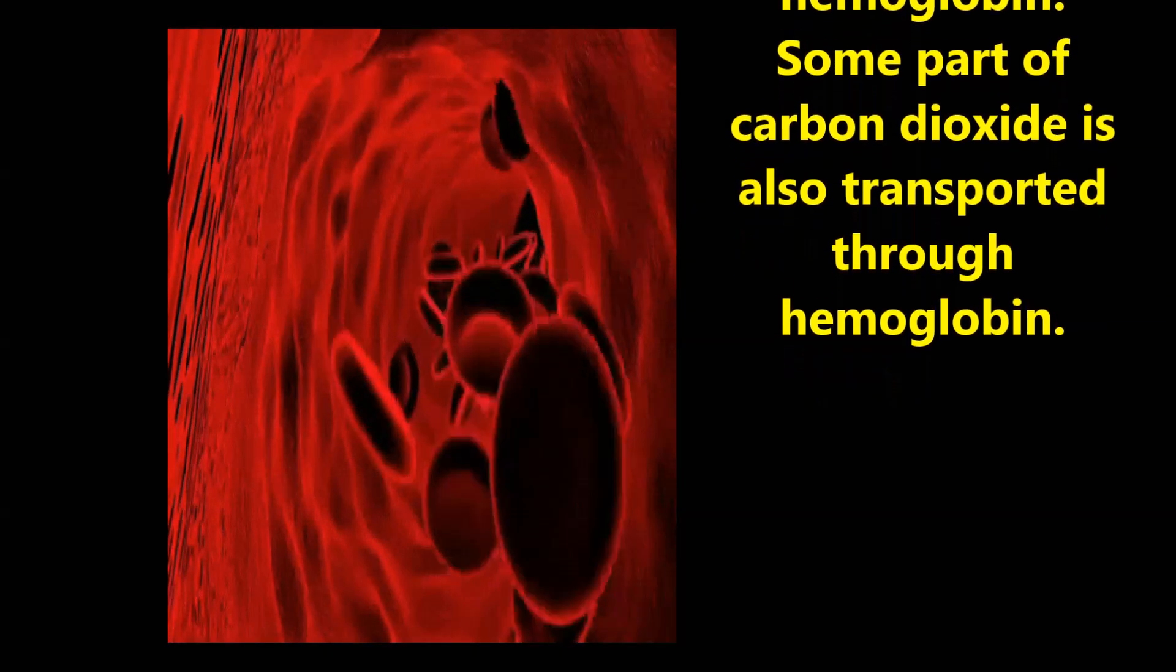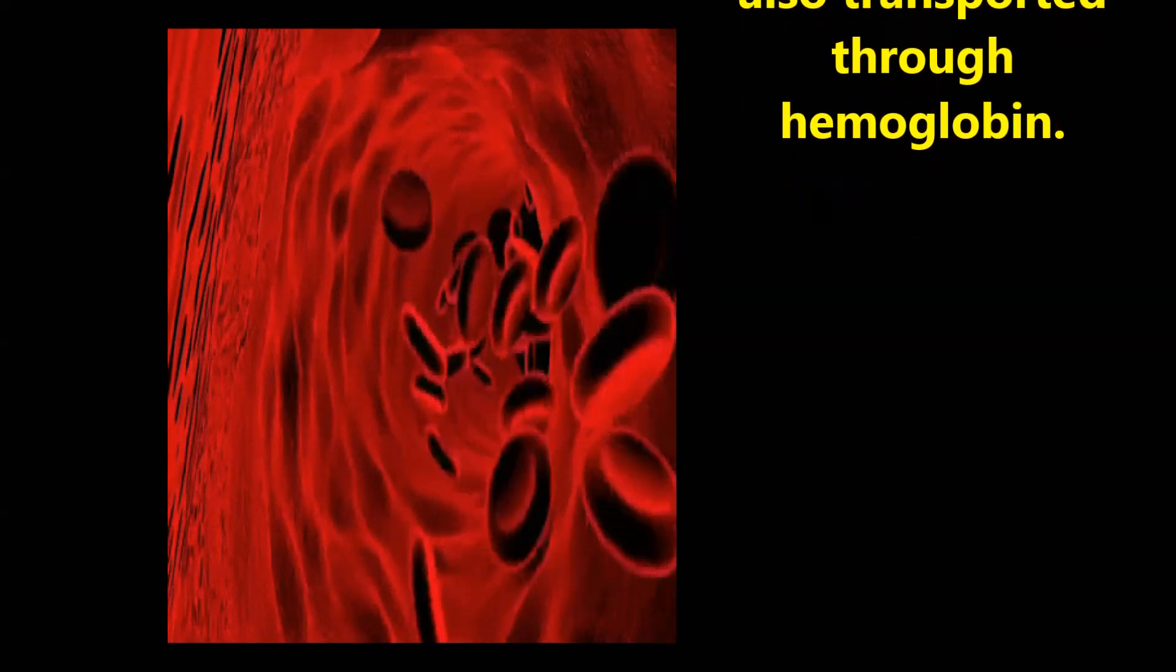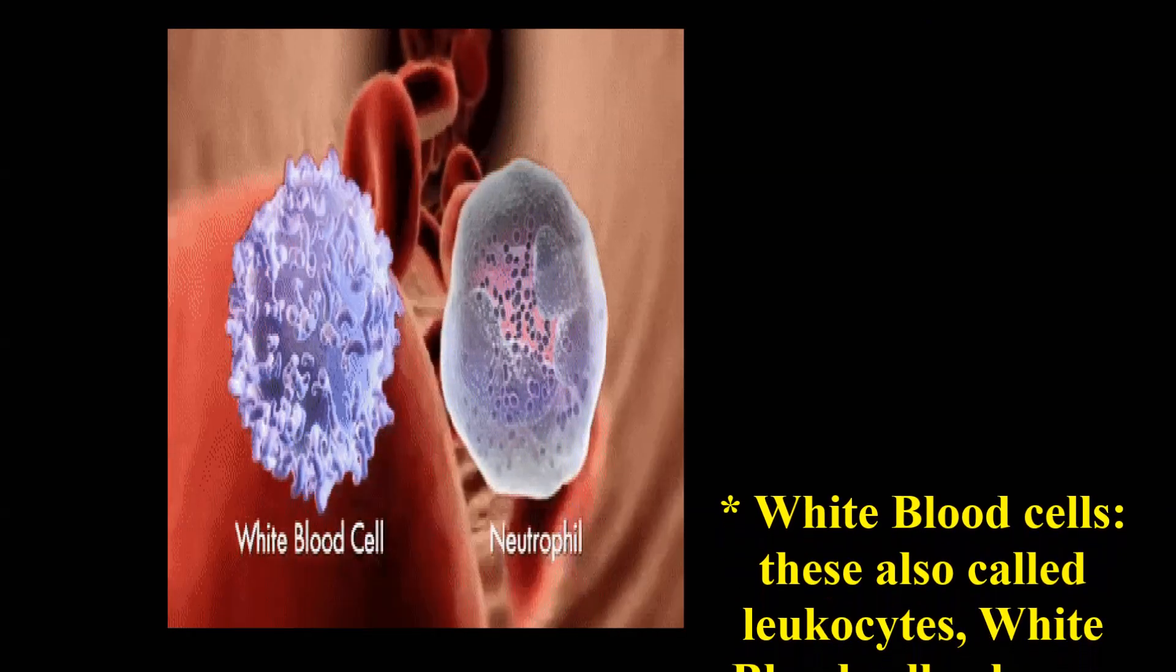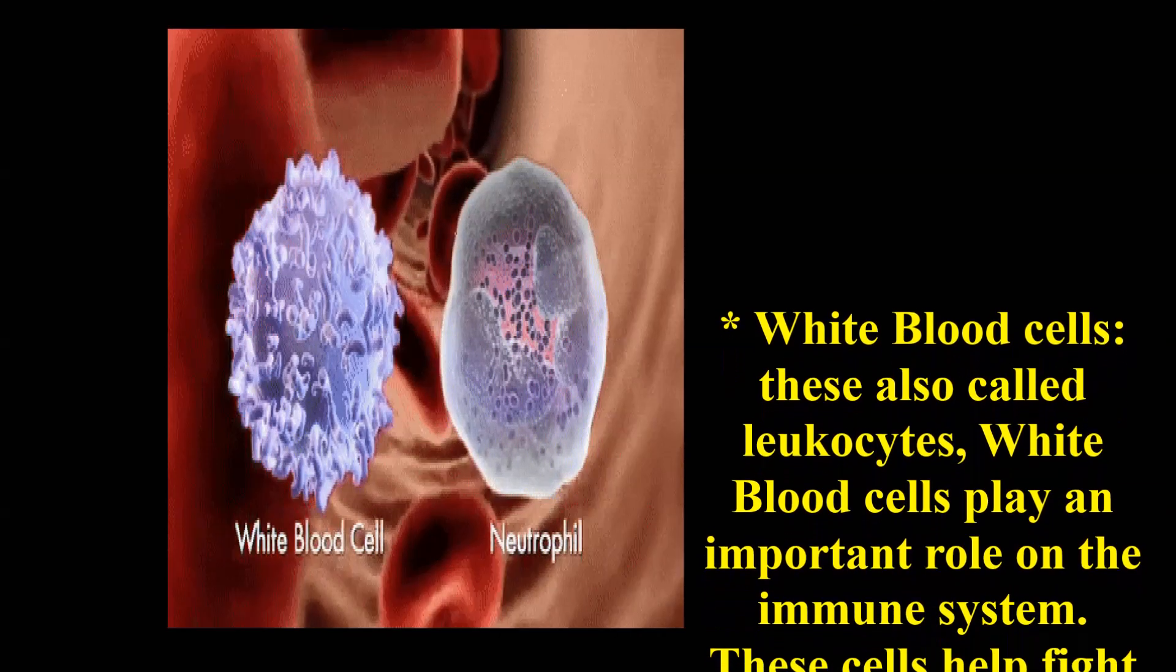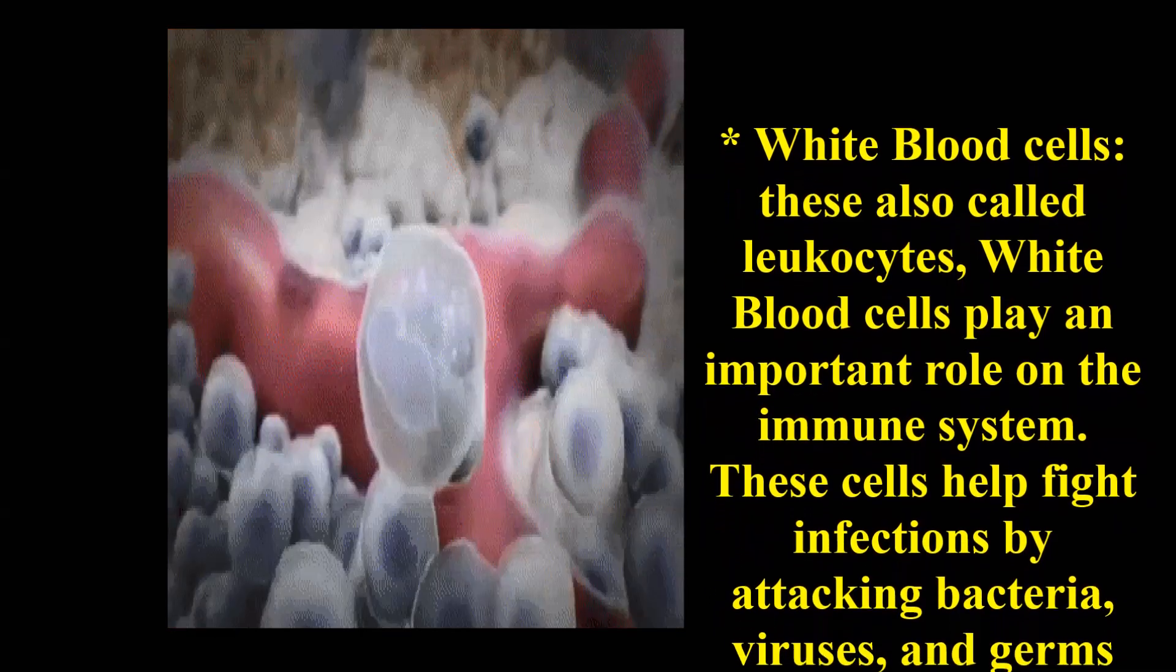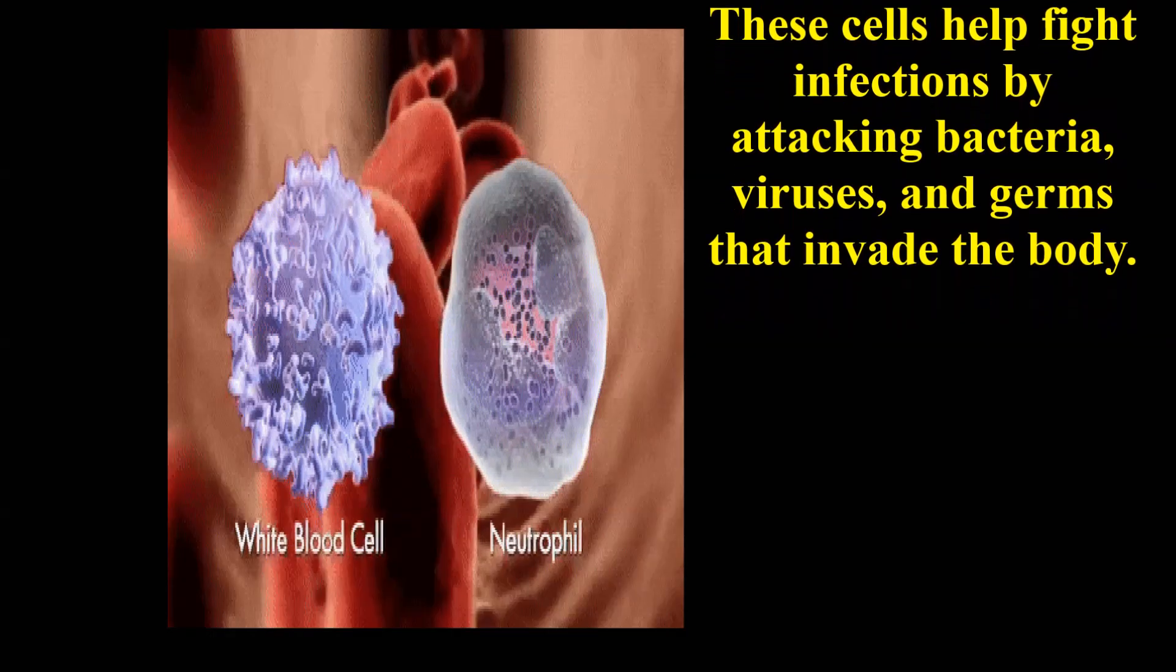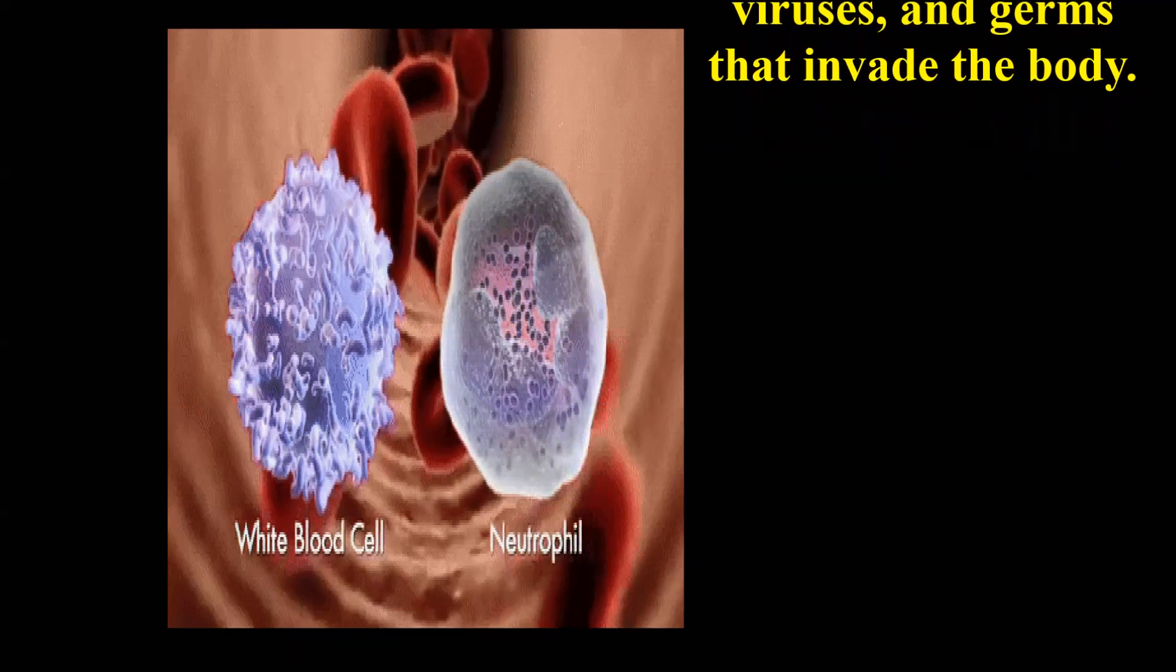Some part of carbon dioxide is also transported through hemoglobin. White blood cells, also called leukocytes, play an important role in the immune system. These cells help fight infections by attacking bacteria, viruses, and germs that invade the body.